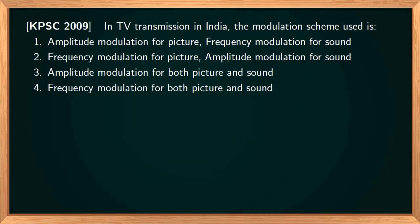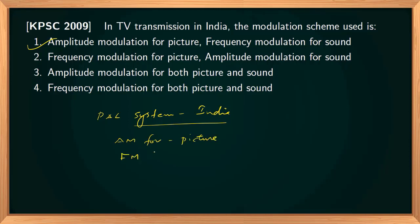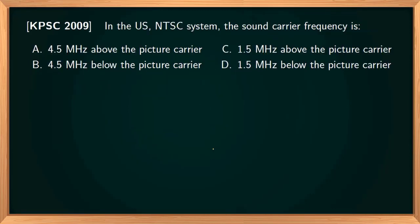In television transmission in India, the modulation schemes used are: amplitude modulation for picture information and frequency modulation for sound information. This applies to the PAL system used in India. So the correct option is AM for picture and FM for sound.